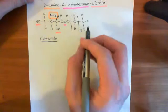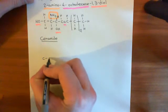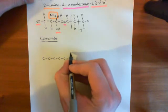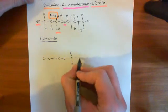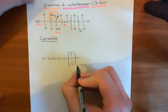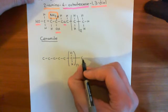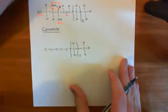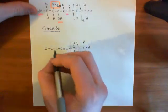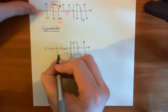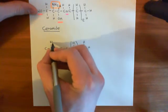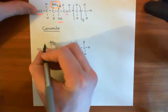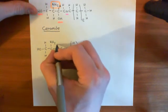To make a ceramide, you take this sphingosine molecule. Here are the five important carbons, and then we have our methylene group repeated 12 times — using our nice trick — and then the methyl group on the end. We have the double bond between the fourth and fifth carbon, the hydroxyl group off the third carbon, an amino group off the second carbon, and a hydroxyl group off the first carbon, with hydrogens everywhere else. So this is the structure of our sphingosine.